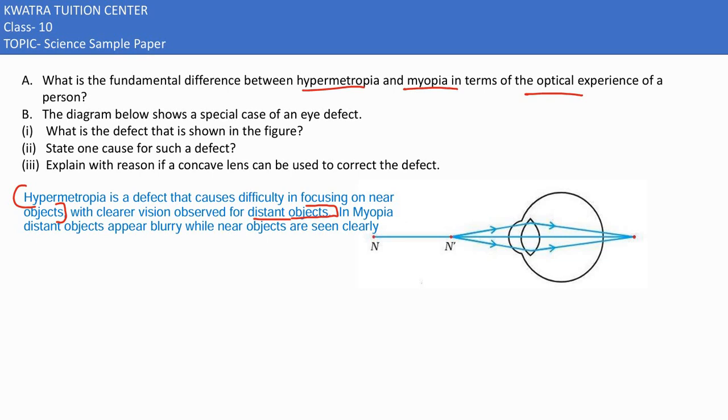Now, they have given the diagram and they are asking us what is the defect shown in the figure. This is hypermetropia, because where is the image? It is at the back of the eye. It should be made in the retina. So, this is hypermetropia.